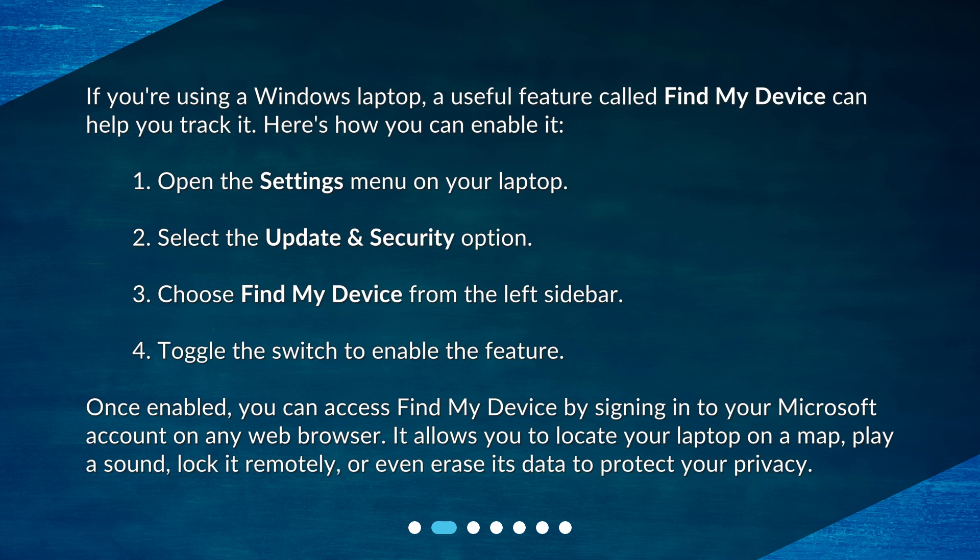3. Choose Find My Device from the left sidebar. 4. Toggle the switch to enable the feature. Once enabled, you can access Find My Device by signing in to your Microsoft account on any web browser. It allows you to locate your laptop on a map, play a sound, lock it remotely, or even erase its data to protect your privacy.